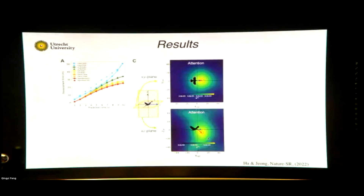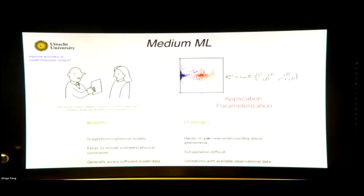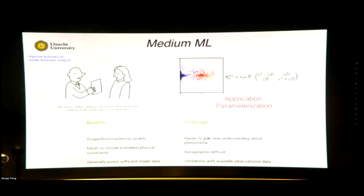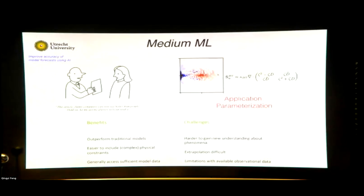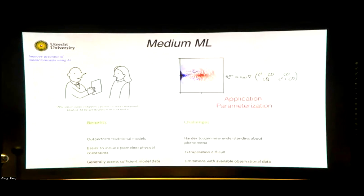Medium machine learning is somewhere in between: you still want to use equations for conservation properties, but everything you cannot capture with that, you want your machine to do. A typical example from ocean mixing is that you don't know how turbulent eddies in the ocean produce transport of quantities like heat and salt. But from the data you can construct equations that mimic these processes. You can derive a set of equations based on the data using a machine. It outperforms traditional models in many cases, and you can easily include physical constraints.